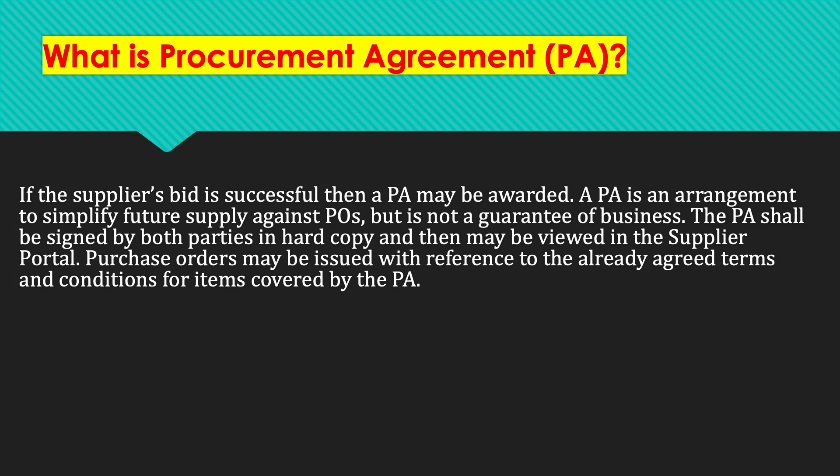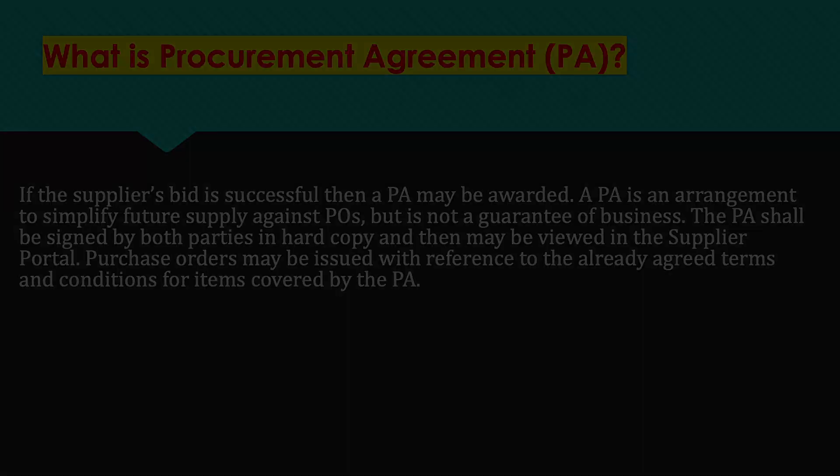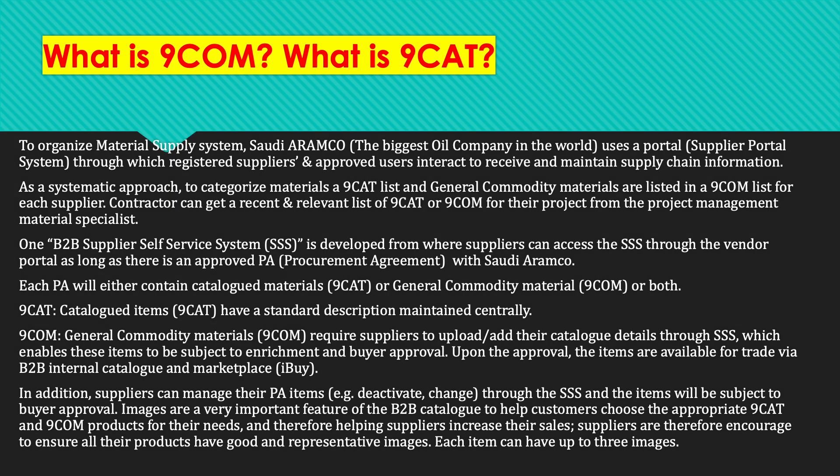What is a procurement agreement or PA? PA means procurement agreement. If a supplier's bid is successful, a PA may be awarded to the supplier. A PA is an arrangement to simplify future supply against purchase orders, but it is not a guarantee of business. The PA shall be signed by both parties in hard copy and may then be viewed in the supplier portal. Purchase orders may be issued with reference to the already agreed terms and conditions covered by the PA.